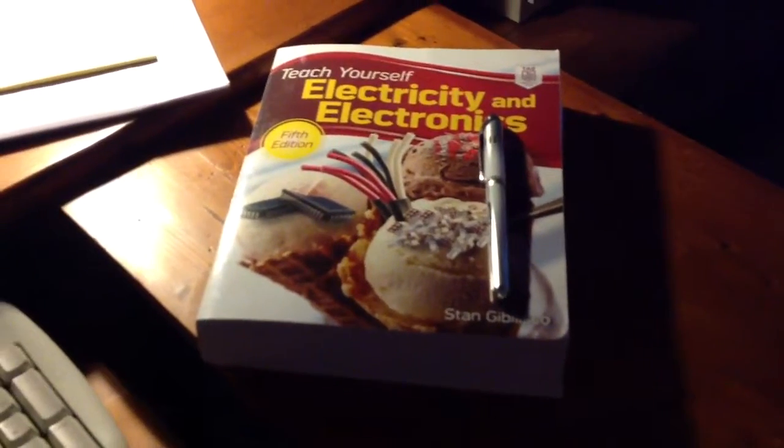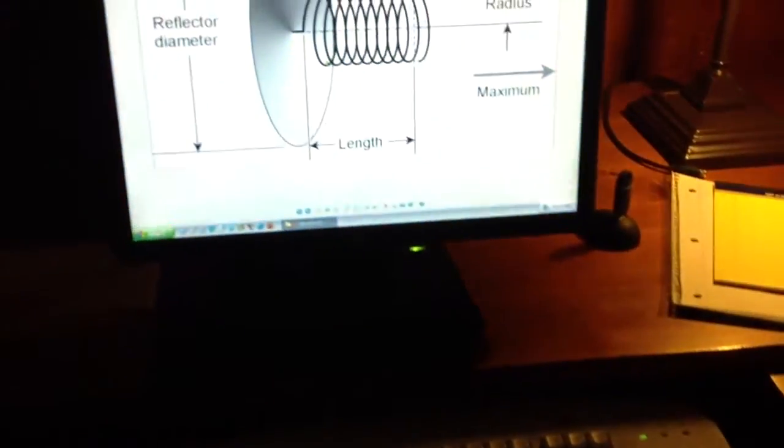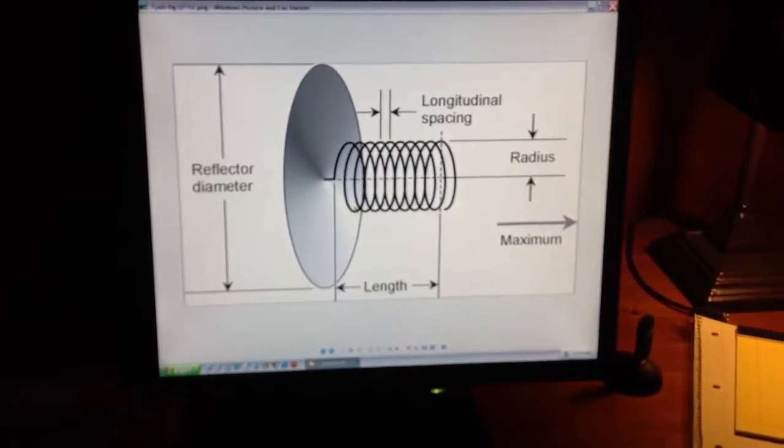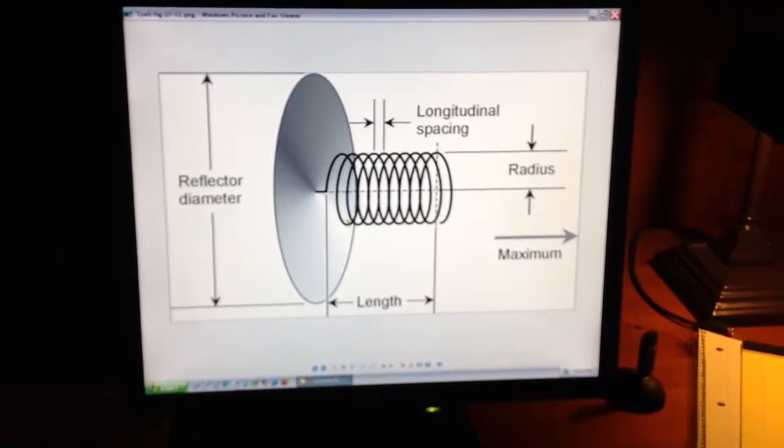The folded dipole, the loop, and the other antennas listed in this particular situation wouldn't work well as a directional antenna at that frequency because it's difficult to make them that small.